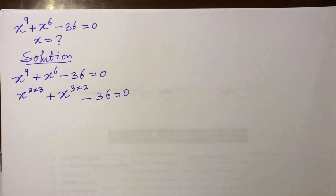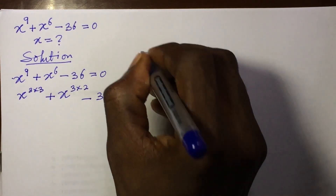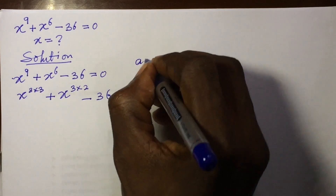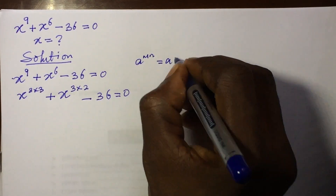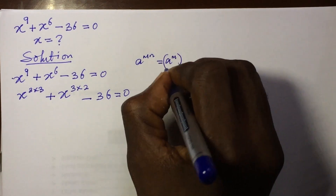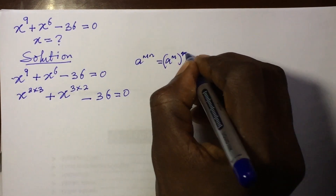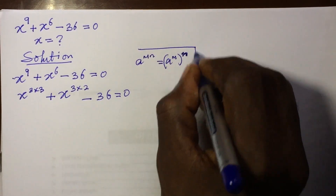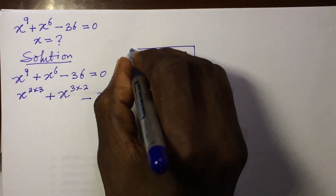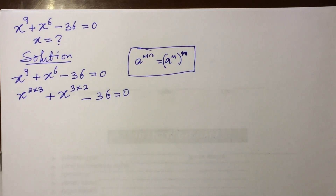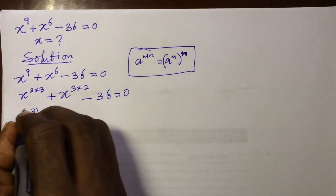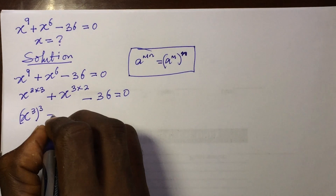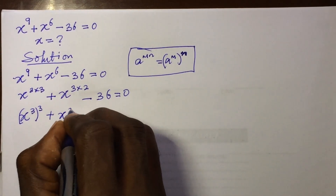We can rewrite the exponents. Recall the identity which says that a to the power of m·n is the same as (a to the power of m) to the power of n. If we apply this relationship in indices, then we can rewrite this as (x to the power of 3) to the power of 3, plus (x to the power of 3) to the power of 2, minus 36, equals 0.